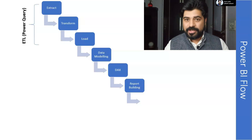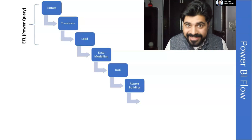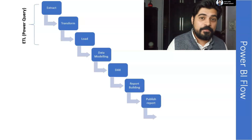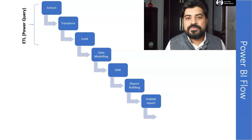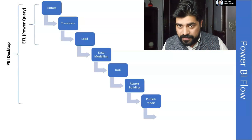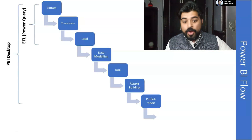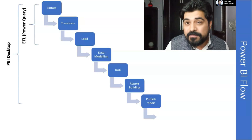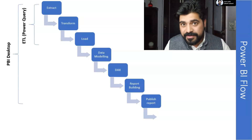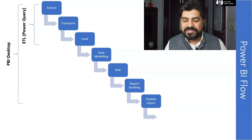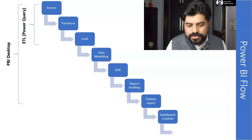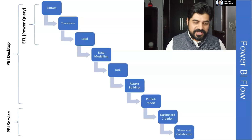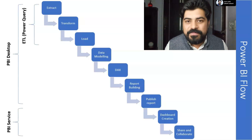Now you have to share it with your client or top management, so you push it onto the cloud — that means publishing the report. So far, all the steps we've done are in Power BI desktop application. Now we move to another component: the cloud-based Power BI program known as Power BI Service, where you've published your report. Once the report is there, you can create a dashboard or share and collaborate with others. This is how the entire Power BI flow works.